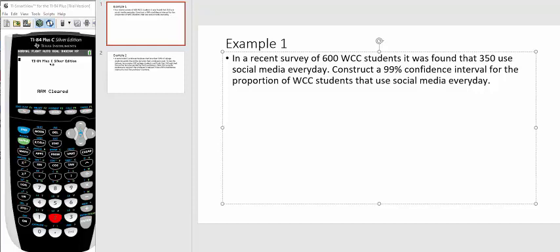In a recent survey of 600 WCC students, it was found that 350 use social media every day. Let's construct a 99% confidence interval for the proportion of WCC students that use social media every day. First off, this number 600 is our sample size. The 350 are the number of students that use social media every day, so that's my x variable.